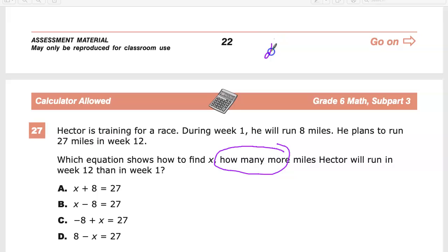Difference is of course a subtraction word. That doesn't necessarily mean that there's going to be a subtraction answer - it just means in order to find it I need to get there. So he wants to run eight miles, 27 miles in week twelve. What's the difference between those two things?